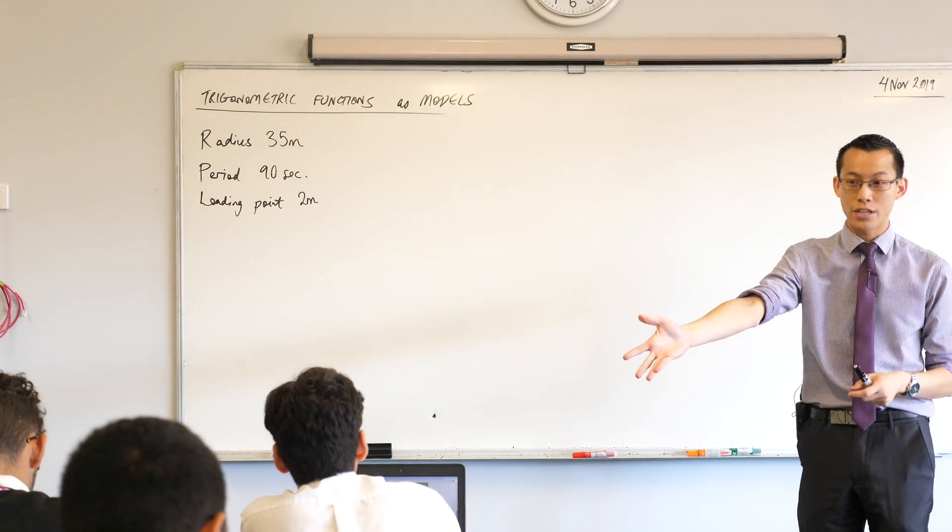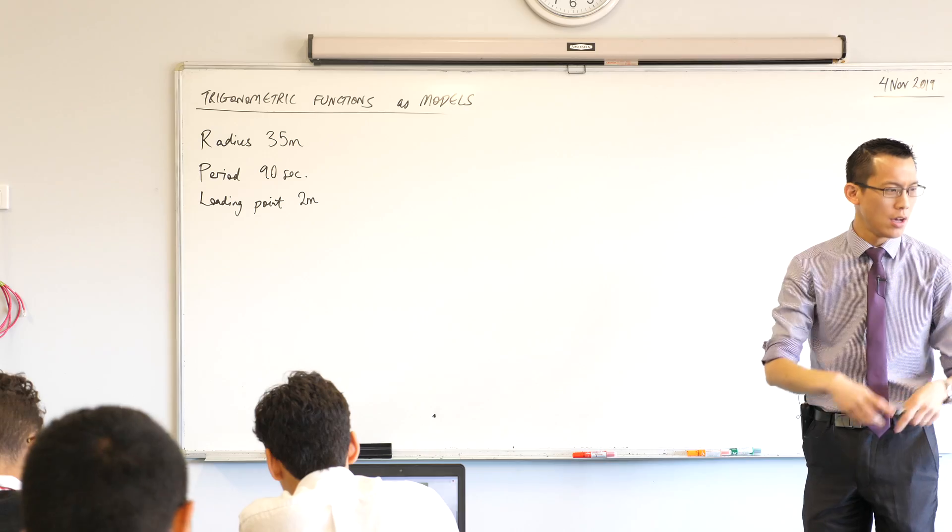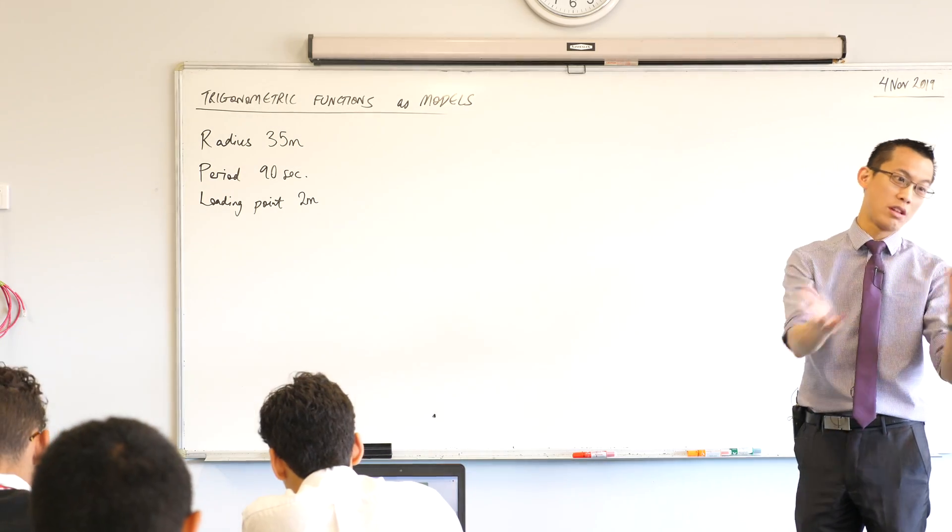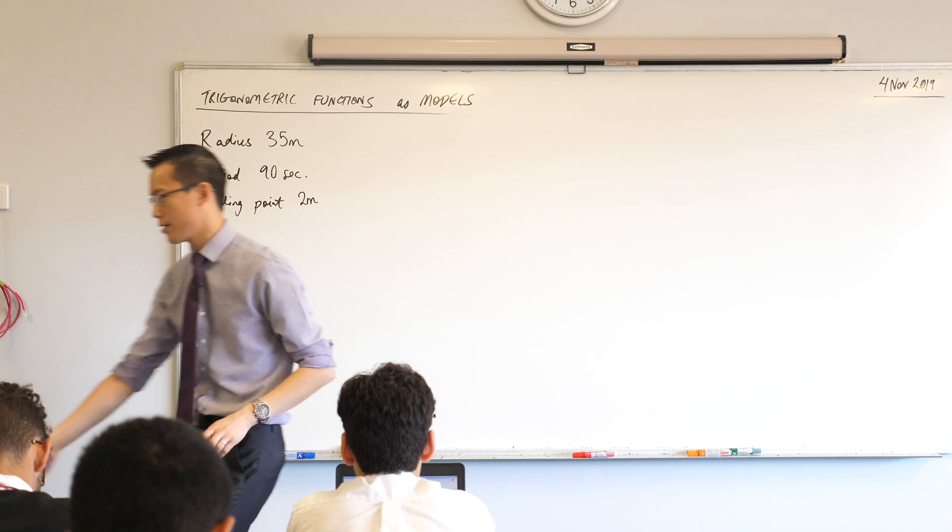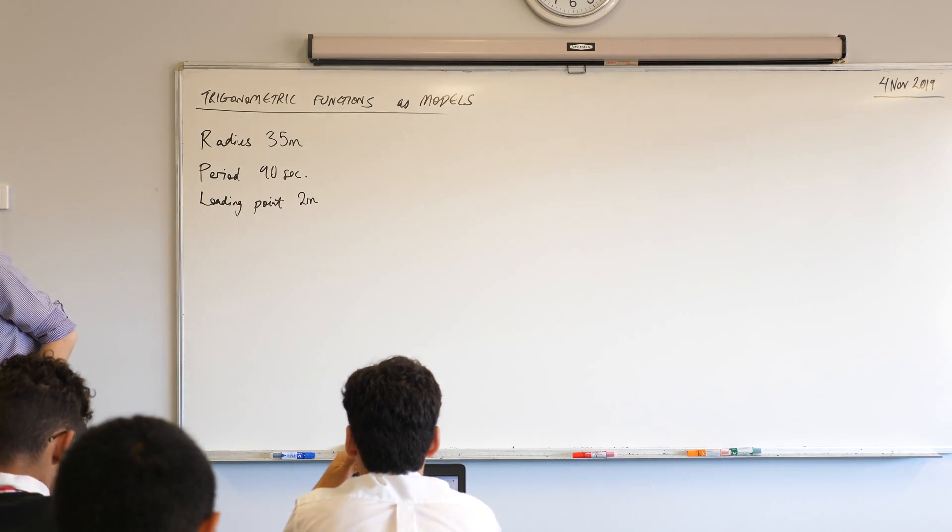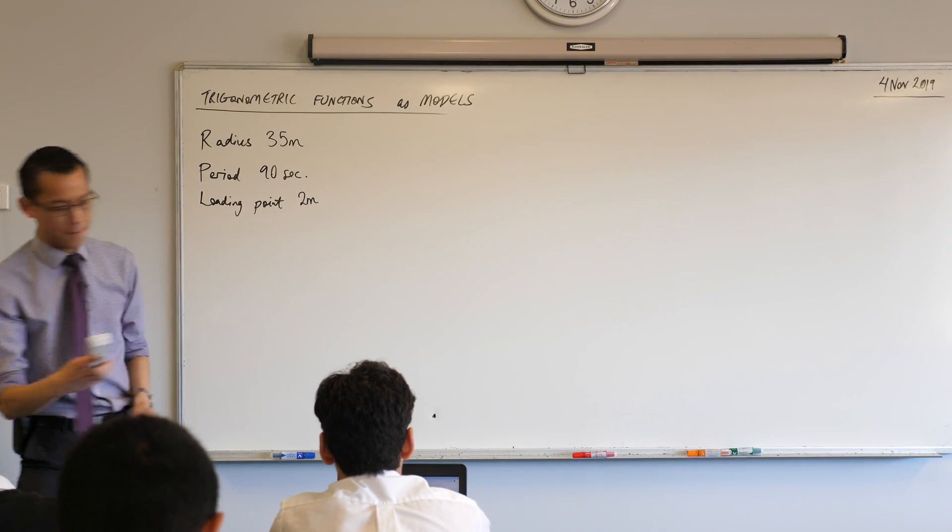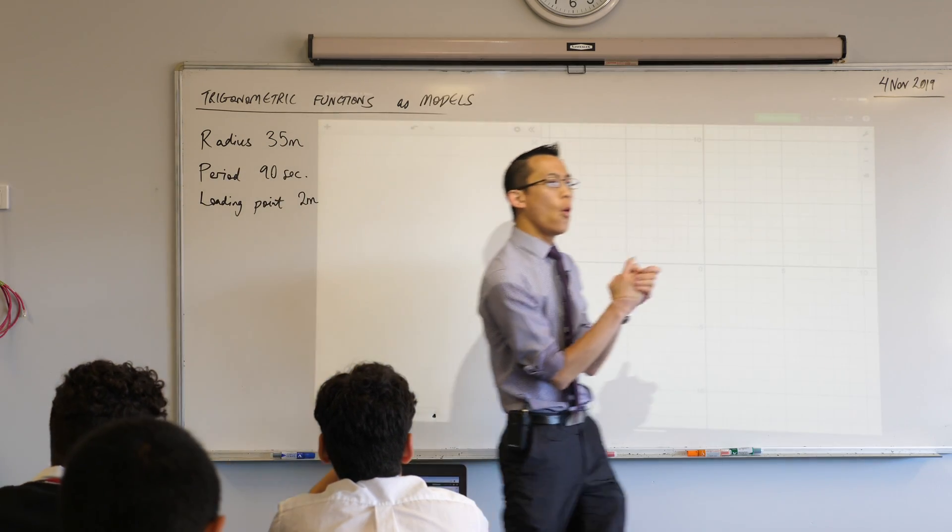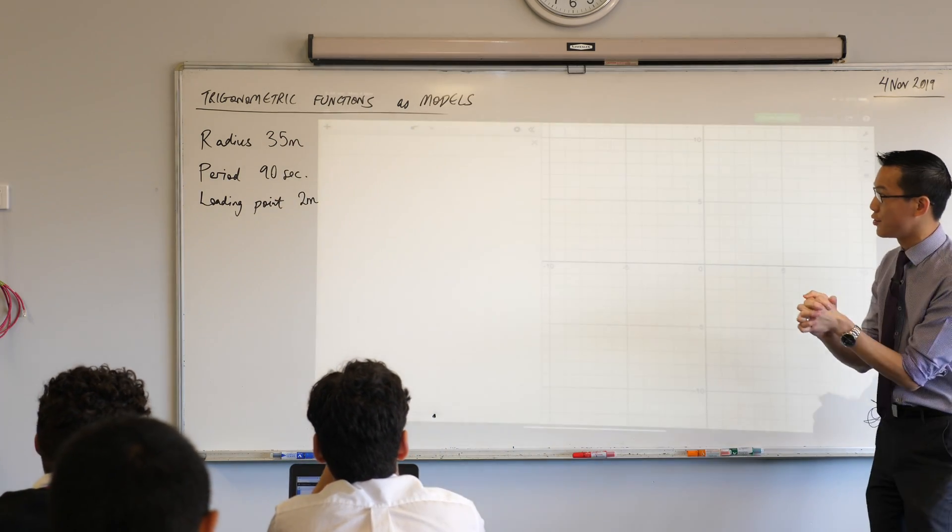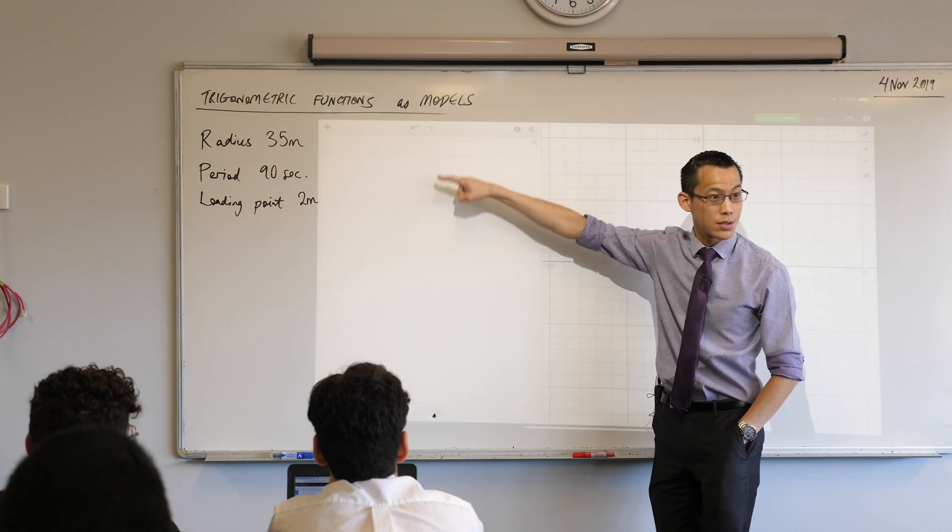What I want you to do is, with your technology there, oh, I shouldn't have mentioned this as well, when you are opening Canvas, I'd also like you to open a tab for Desmos, because that's what we're going to use to construct our model here. Right, now, we're going to use a trigonometric function to model the motion of this Ferris wheel.